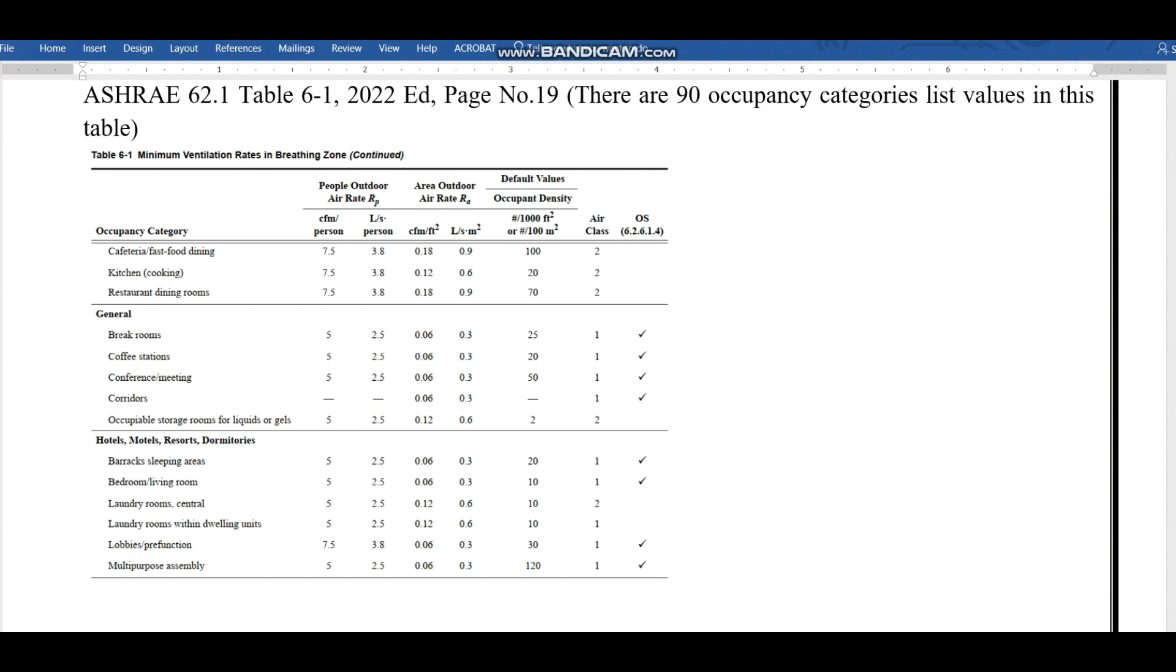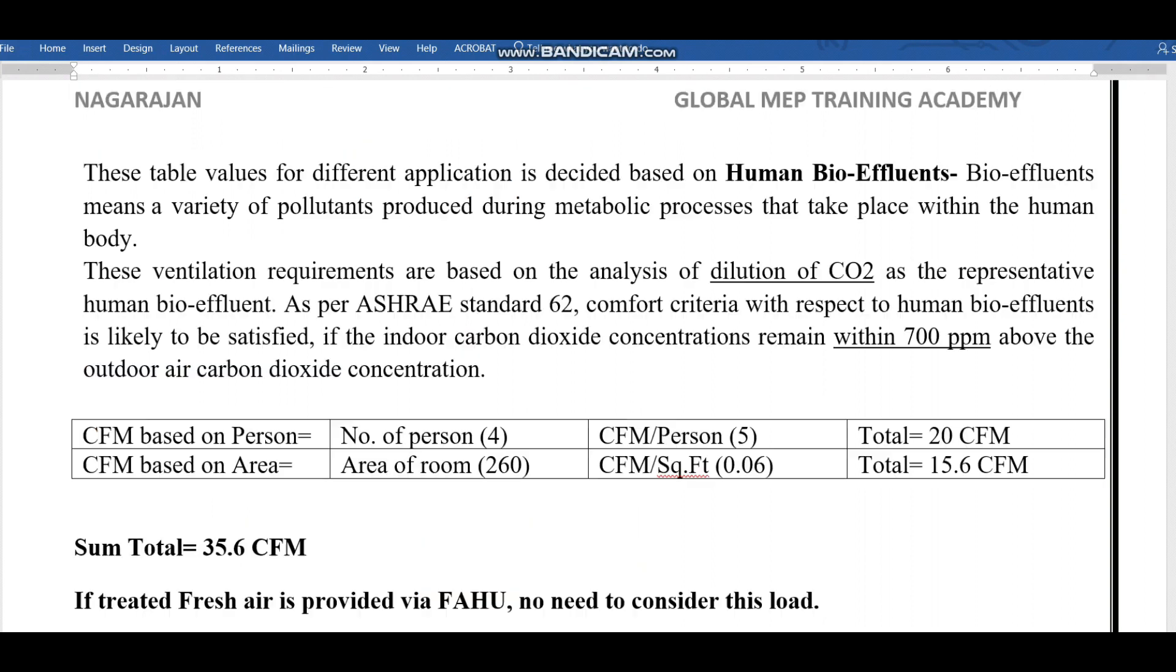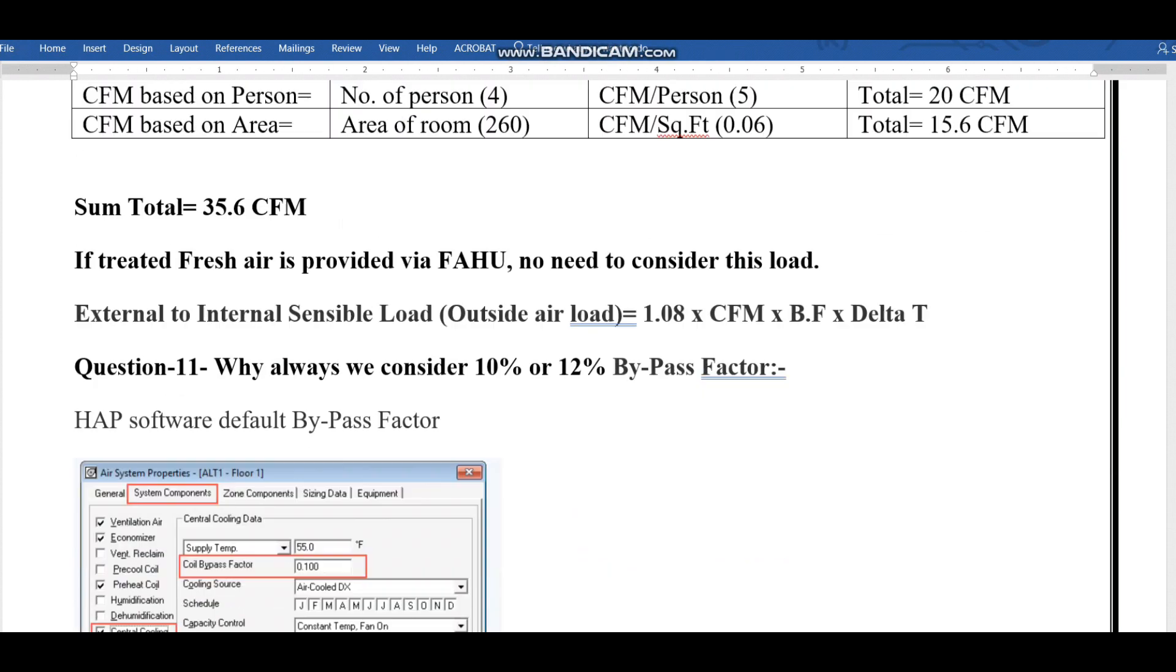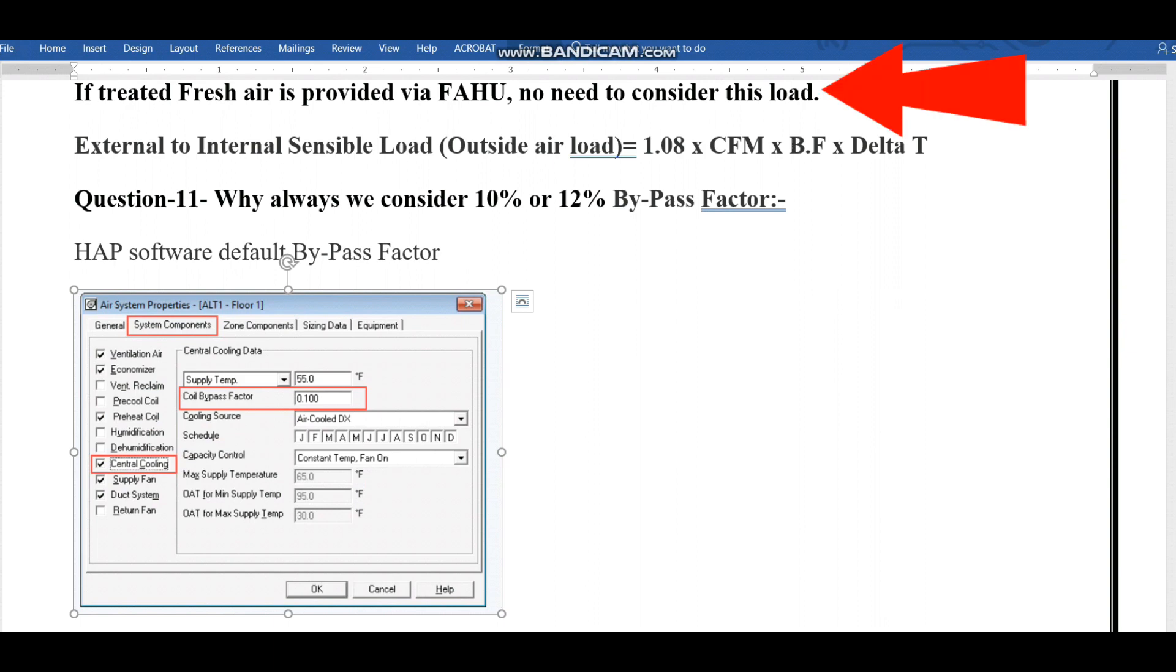For example, for hotel bedroom or living room we need to consider 5 CFM for one person and 0.06 CFM for one square meter. I applied the numbers: number of persons 4 times 5 CFM per person is 20 CFM. The area of the room is 20 times 13, 260 square feet, times 0.06 CFM per square foot equals 15.6. Total is 20 plus 15.6, which is 35.6 CFM.